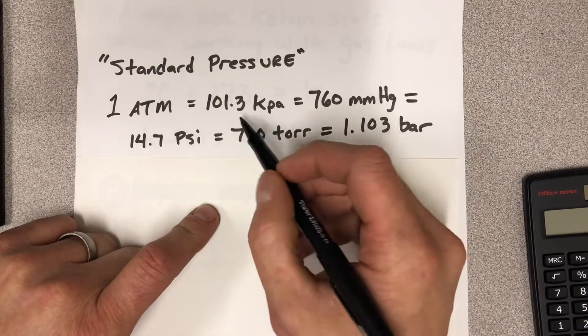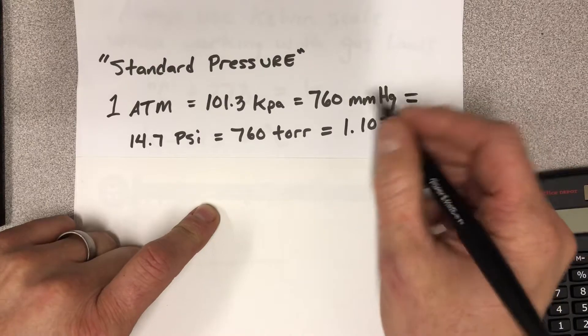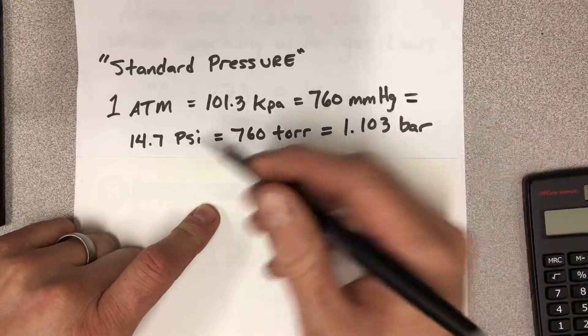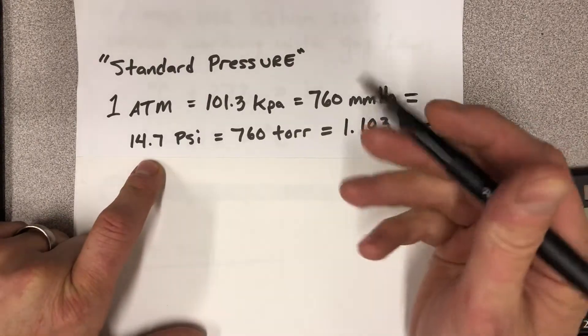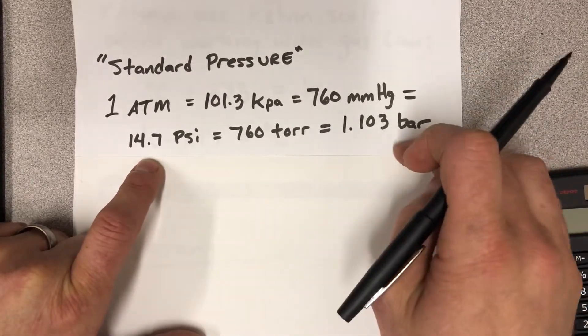And so 101.3 kilopascals, 760 millimeters of mercury that comes from a mercury barometer reading, 14.7 pounds per square inch, 760 torr, 1.103 bar.